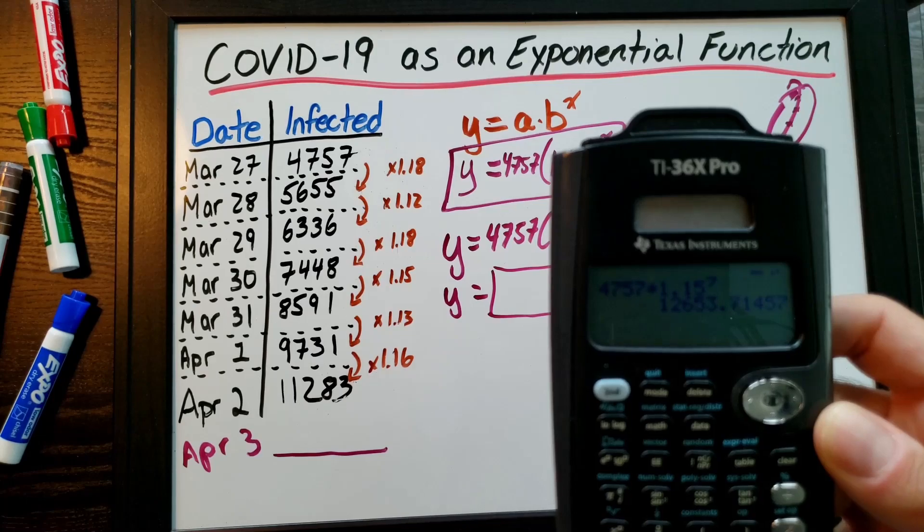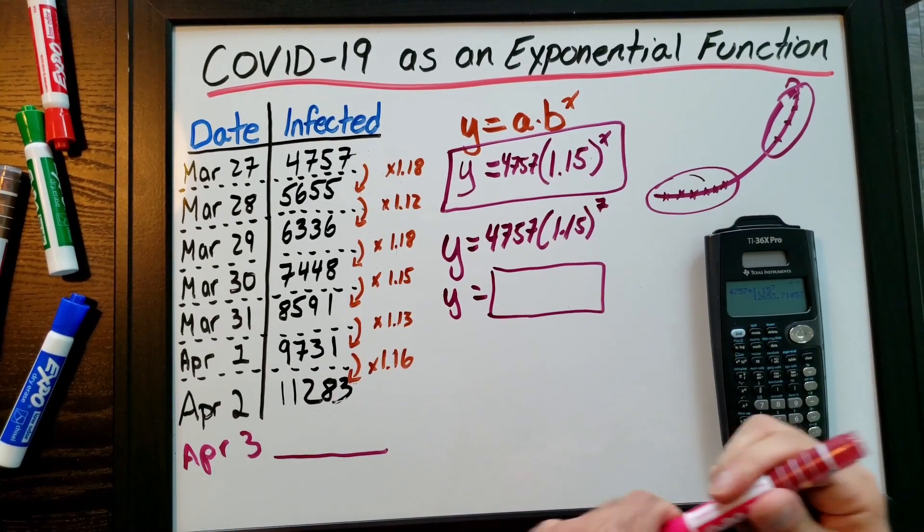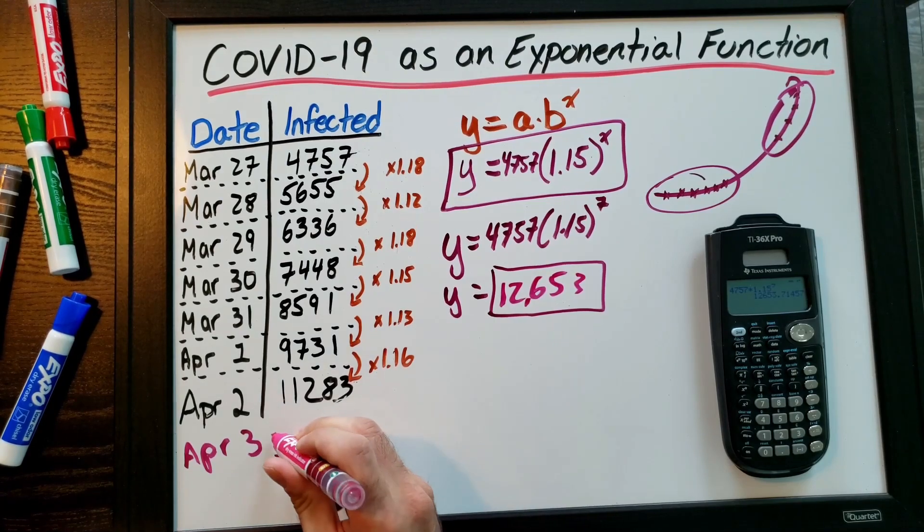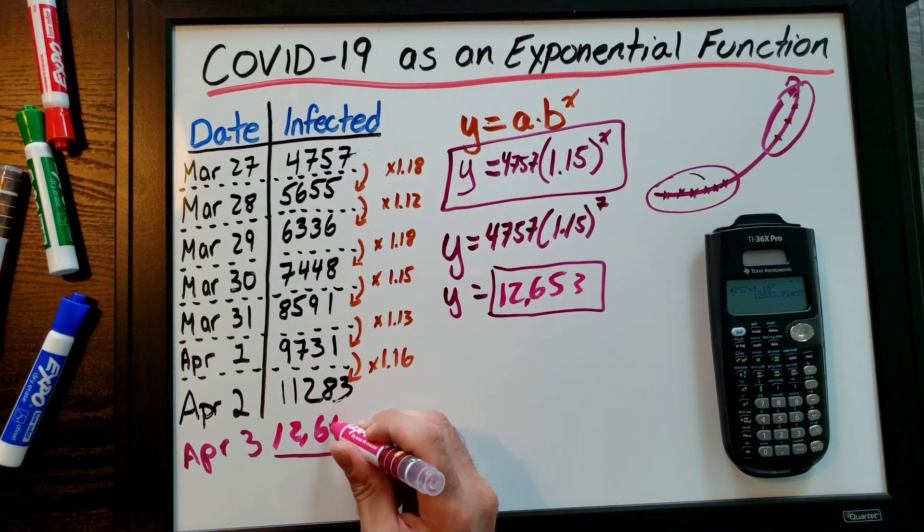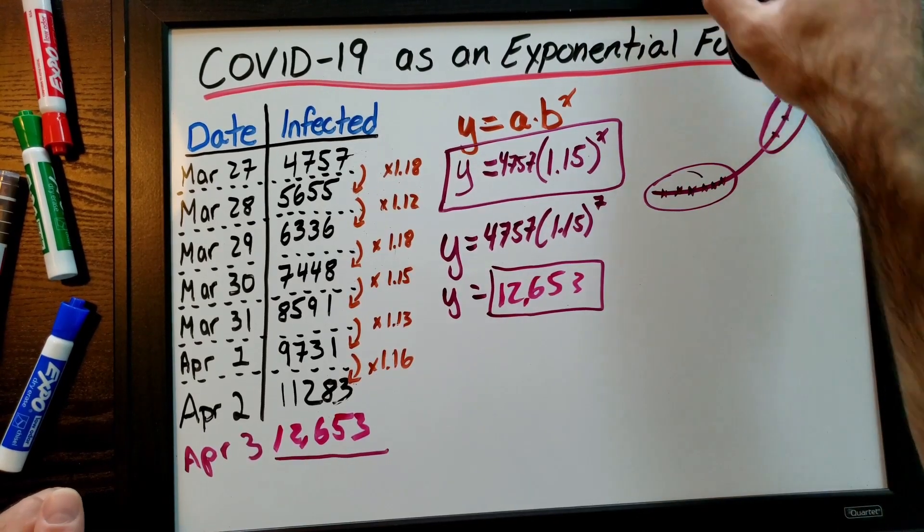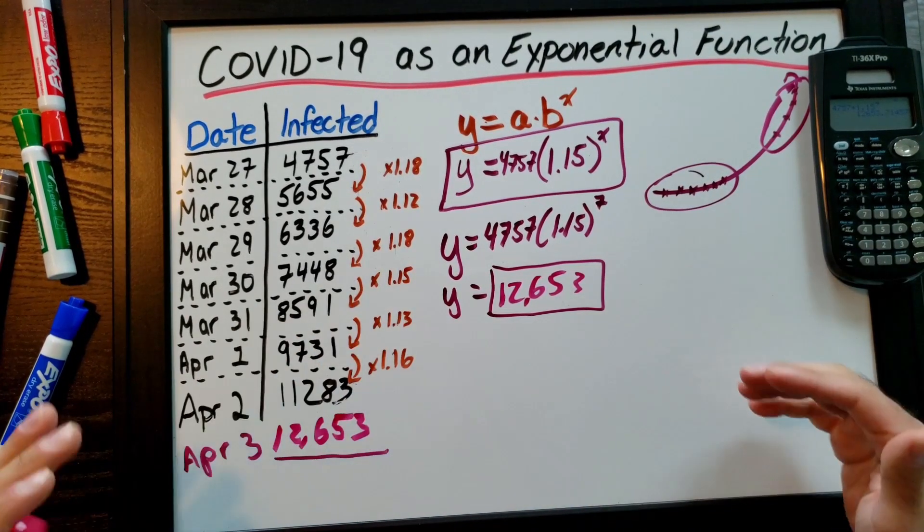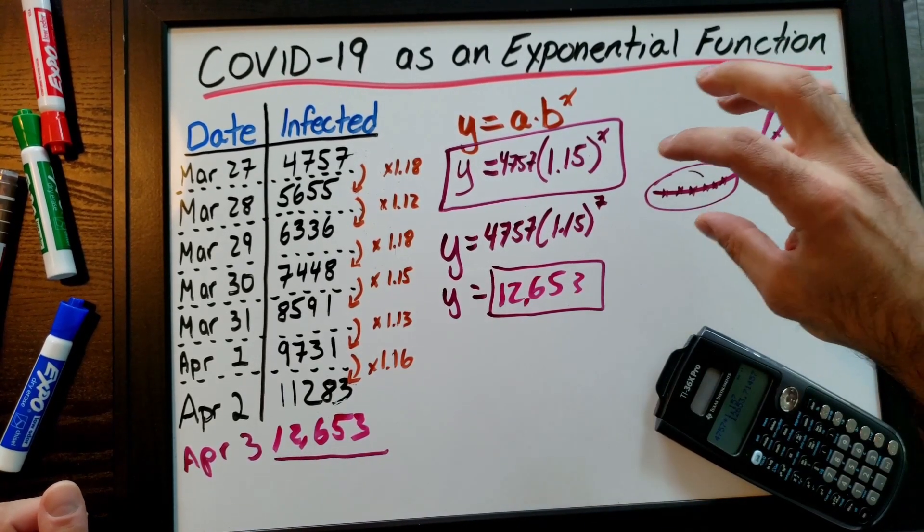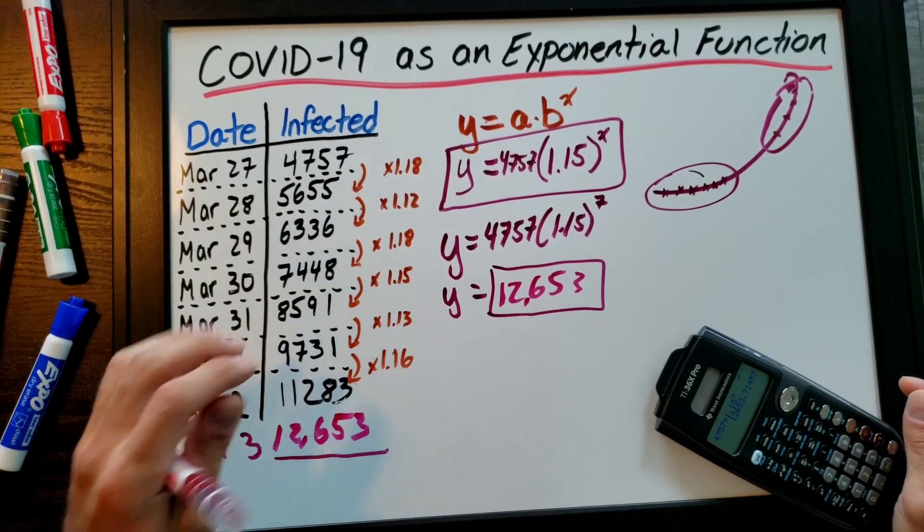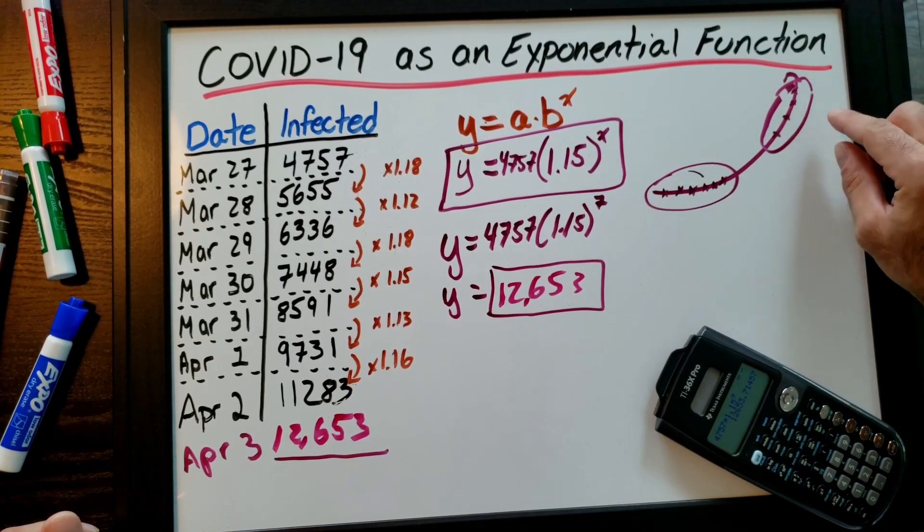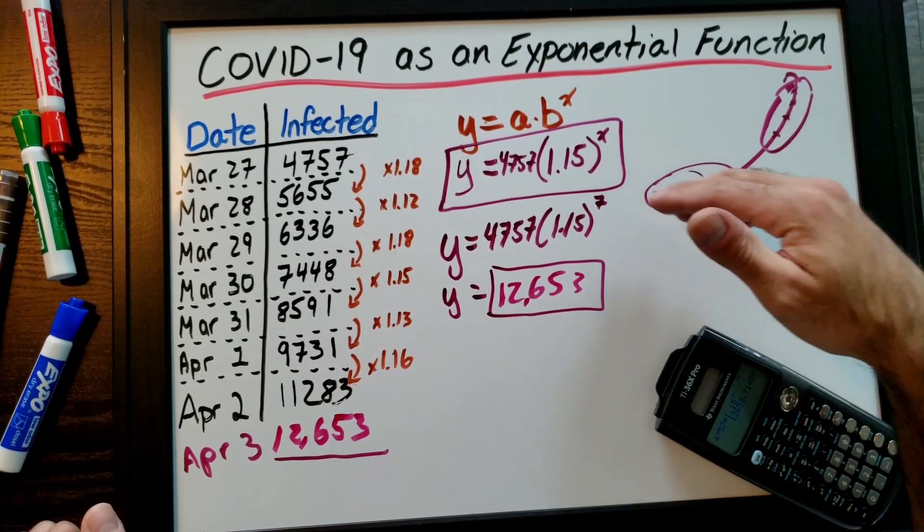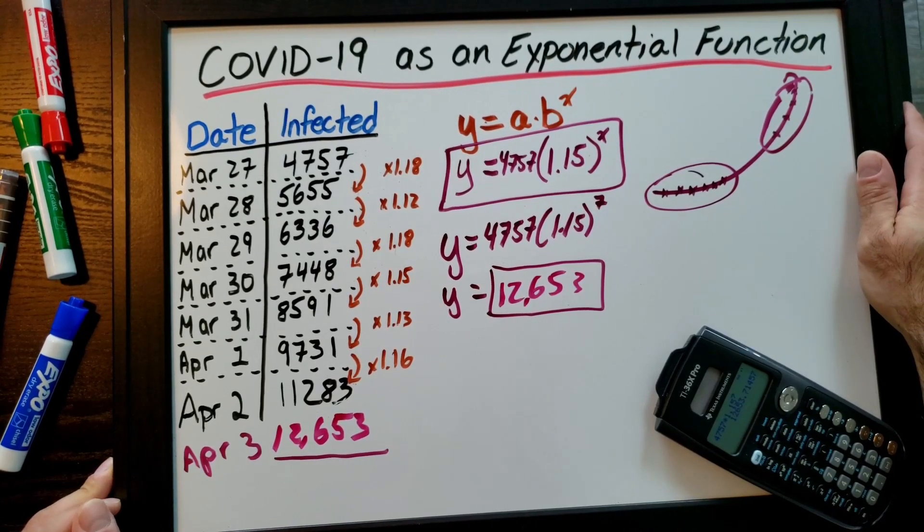So I picked up my calculator and I've plugged in 4,757 times 1.15 to the exponent 7 and I got 12,653. So with this model after today we should have 12,653 people infected in Canada. It's a good thing to look up today to see if this is accurate or not. Now what can we use this for? We can use this for extrapolation. Interpolation is looking inside the data, but extrapolation is looking further on into the future.